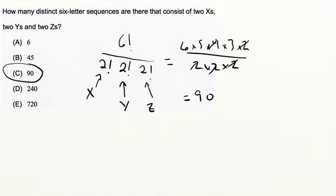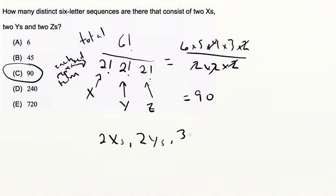What I'm actually doing is I take the total and then divide by the factorial of each repeated term. So if, for example, we had two x's, two y's, three z's, we would find six factorial divided by two factorial divided by two factorial divided by three factorial.